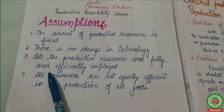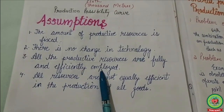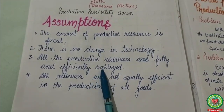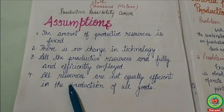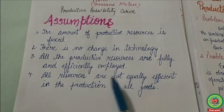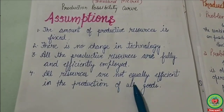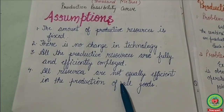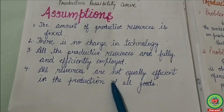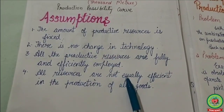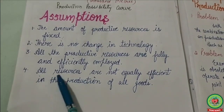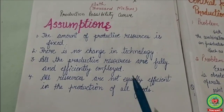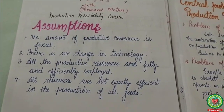Third, all productive resources are fully and efficiently employed — they are used according to their capabilities. Fourth, all resources are not equally efficient in the production of all goods. This means that if resources are transferred from the production of one commodity to another, there is a decrease in their efficiency, resulting in an increase in the cost of production of the other commodity.